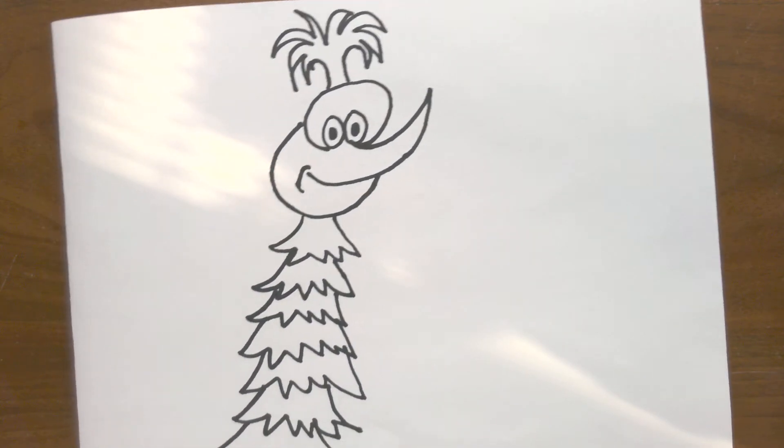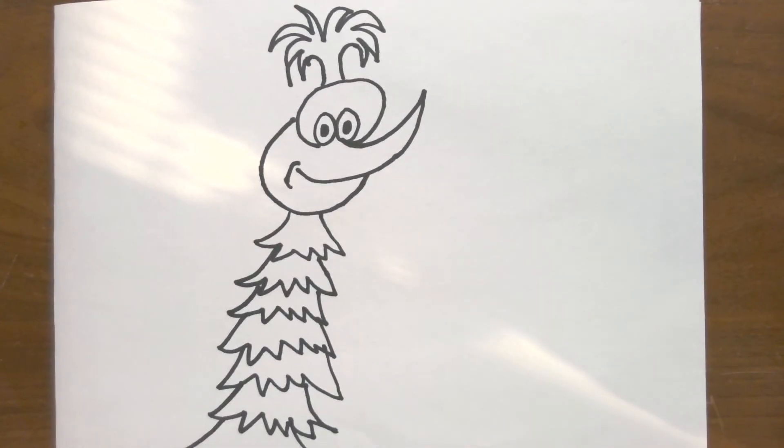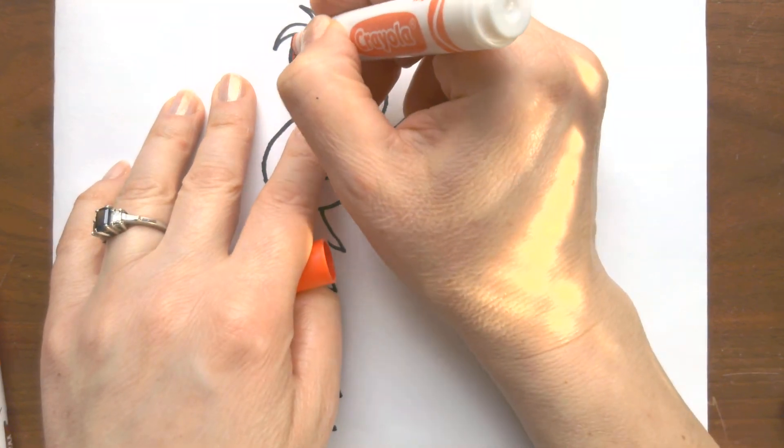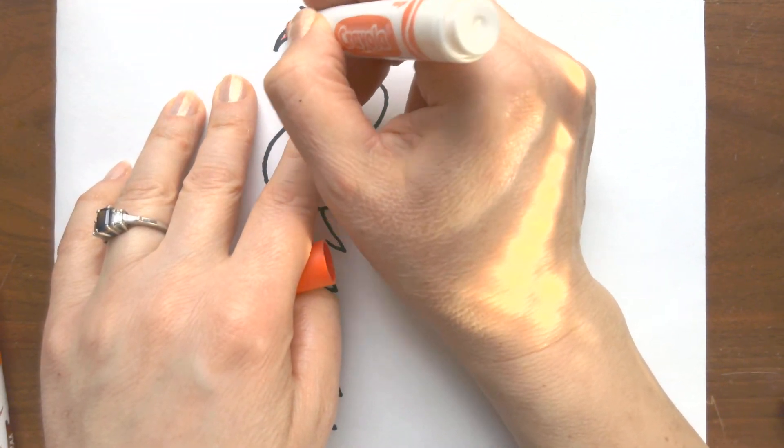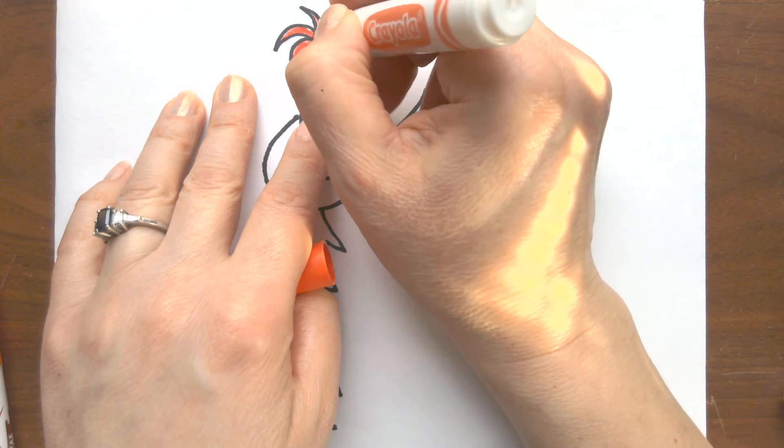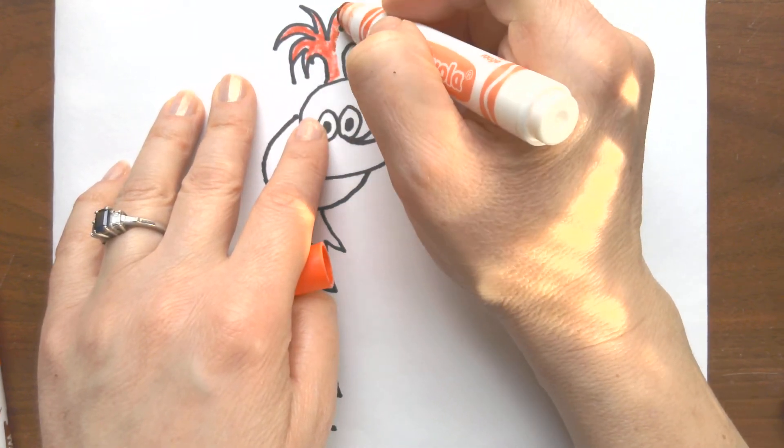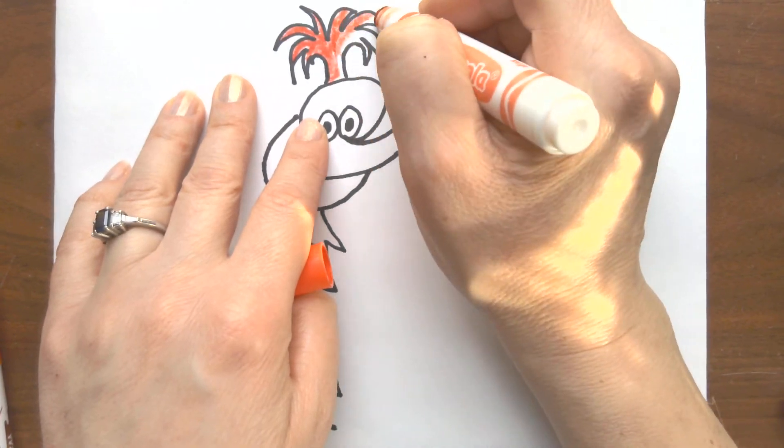We're going to go ahead and color him in. You are the artist - you can color yours in any color you want. In the pictures he's yellow and red and orange, but you can make it rainbow colors, purple, or blue.